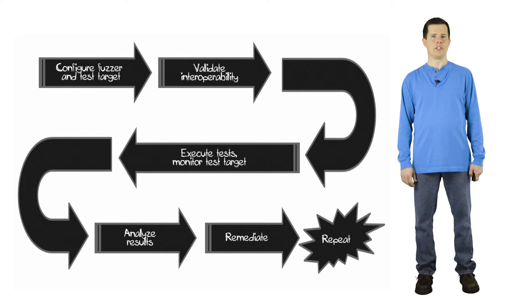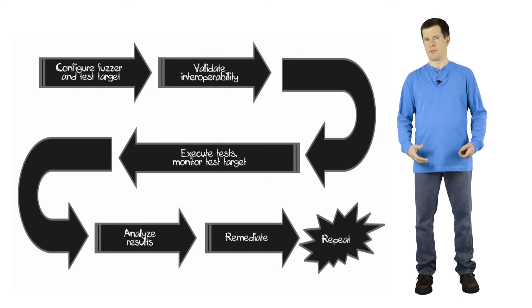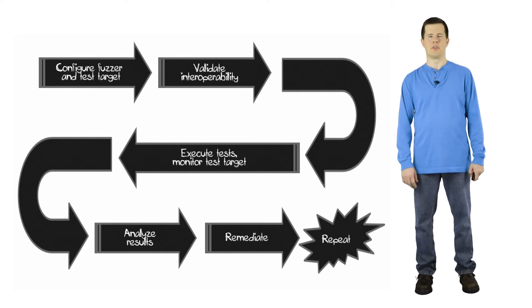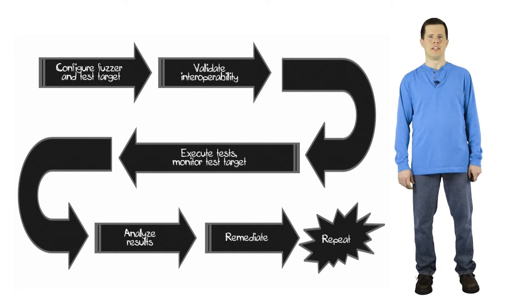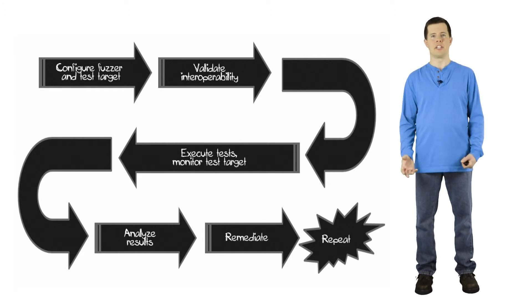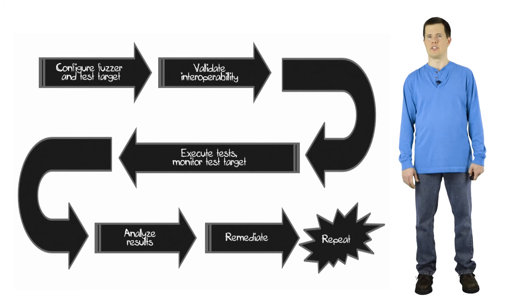The workflow when you're doing fuzzing, if you're going to sit down and fuzz something, this is the workflow, the basic workflow that you would follow. So the first step is always configuration, getting things set up. So you want to configure your target so that it's able to communicate with the fuzzer, and you want to configure your fuzzer so it knows where to find the target. Basically you're aiming the fuzzer at the target. And usually you just need to enter an address of some kind so that the fuzzer knows where the target is.